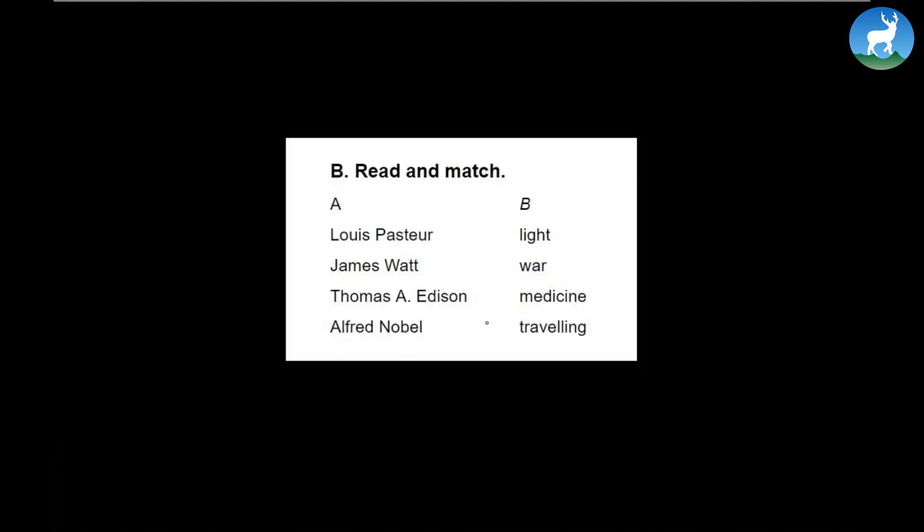Now let's continue further. Look at this: read and match. It's very simple. I'm just going to read the names. Louis Pasteur, James Watt, Thomas Alva Edison or Thomas A. Edison, Alfred Nobel - light, war, medicine, and traveling. See in what way these names can represent these words given in section B. So you can just read and match the following here. And as you match the following, don't go like crisscross like this. No crisscrossing. Instead you just write Louis Pasteur, use a ruler to draw a straight line, and he was definitely about medicine. See, this is how it can be done. Rest you can do it in the classroom or you can do as homework.